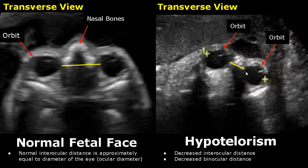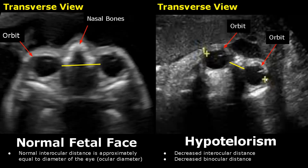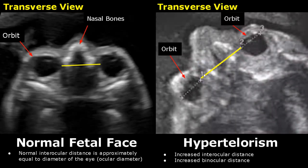The distance between the medial canthi of both orbits is called interocular diameter, and this distance is approximately equal to the diameter of the eye. In hypotelorism, this interocular distance is decreased, and the binocular distance — that is, the distance between the lateral canthi of both eyes — is also decreased; the eyes are closer to each other. In hypertelorism, the interocular and binocular distances are increased, and the eyes are much further away from each other.